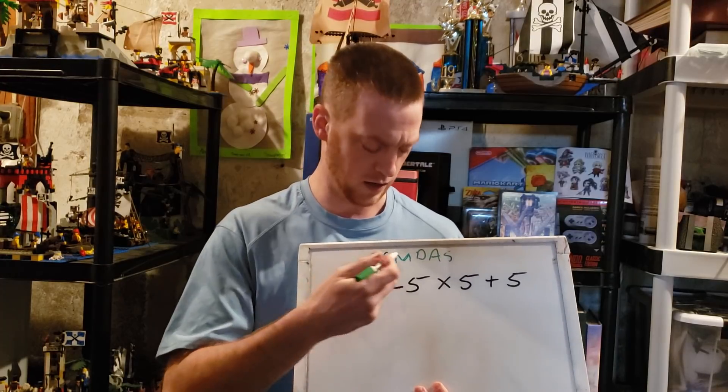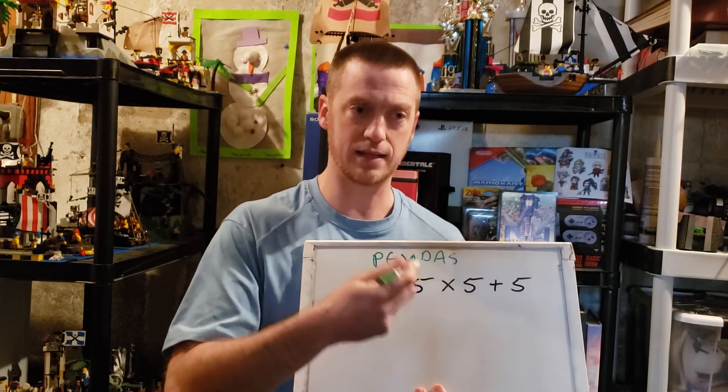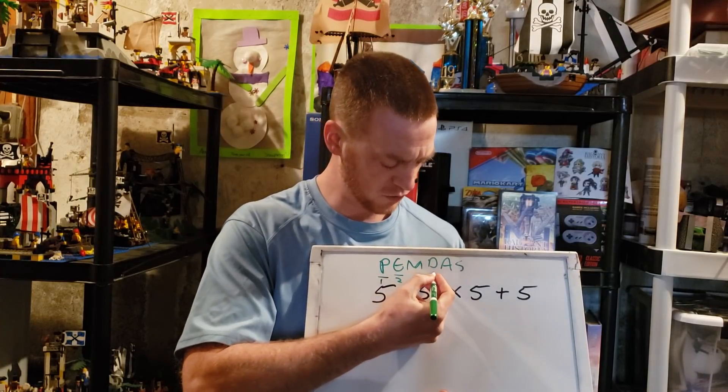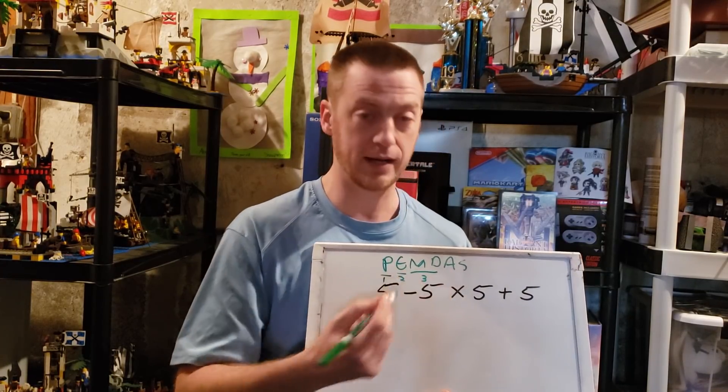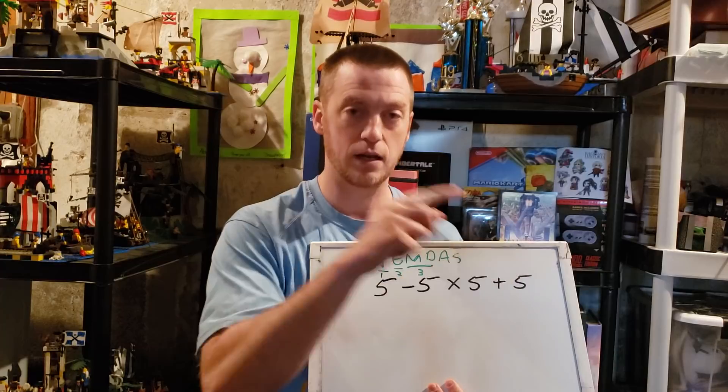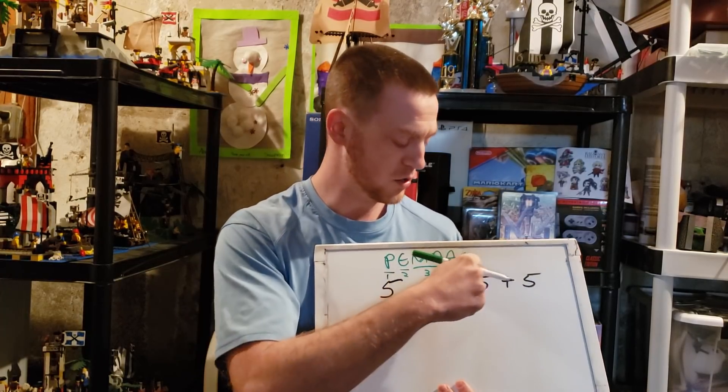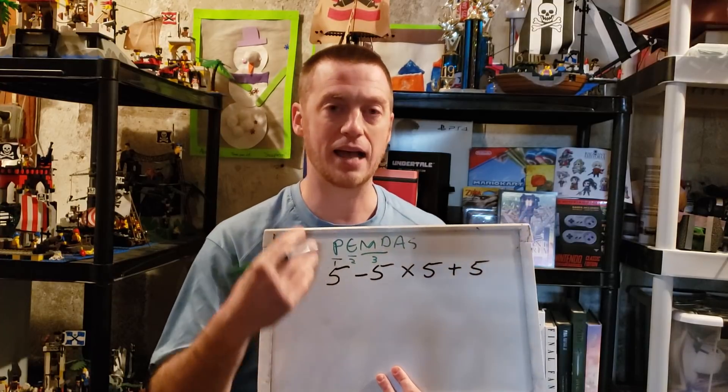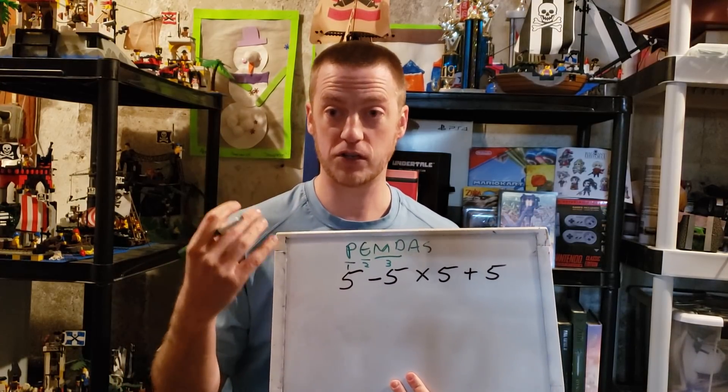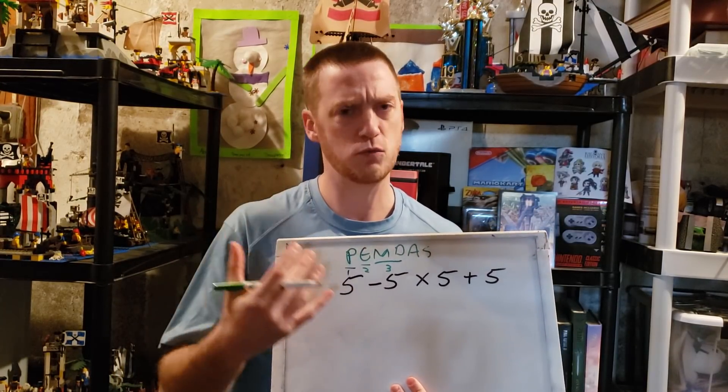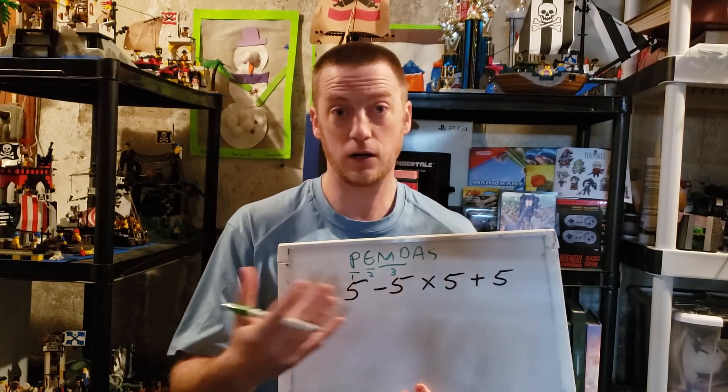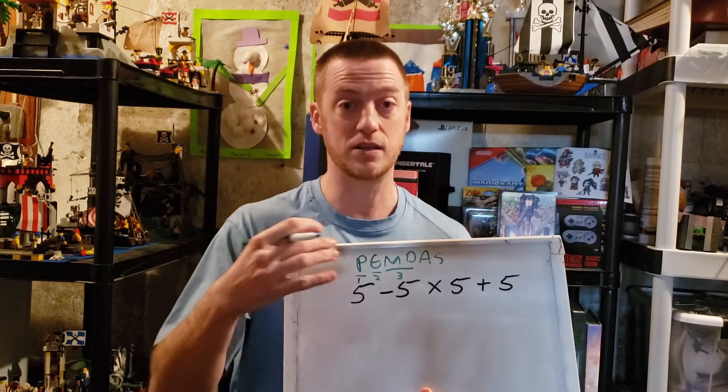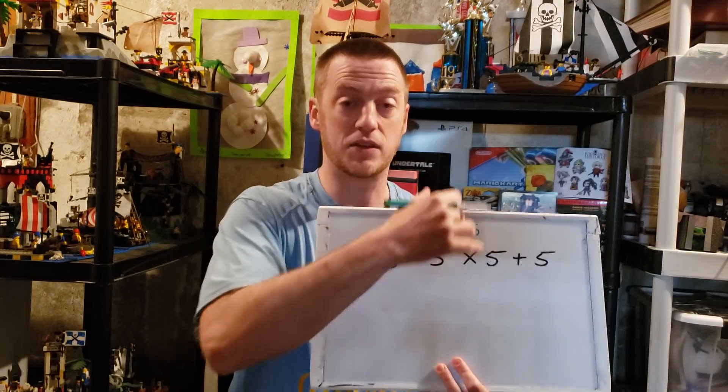Then this is the confusing part. People think all right, I'm going to multiply first then I'm going to divide, then I'm going to add then I'm going to subtract. That's not actually true. You're actually going to multiply and divide left to right first before you would add or subtract. So multiplication and division has to happen as the third step, but they would happen together. The reason why is because multiplication and division really are the same operation.